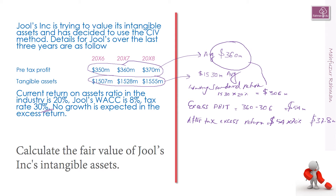Finally, we discount the excess return to present value using the formula PV = CF1 / r. Substituting, we put 37.8 in place of CF1 and our WACC of 8% in place of r. The answer is 472.5 million dollars. That is how you can use the CIV method to value your company's intangible assets based on only a few pieces of readily available information.